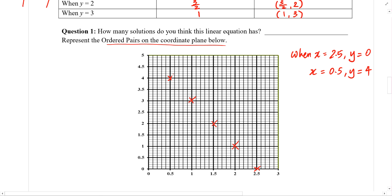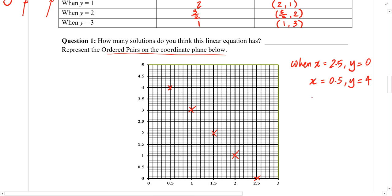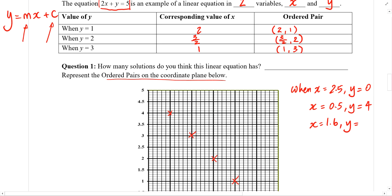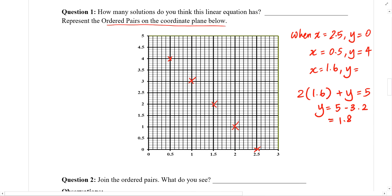But why stop at x equals to 0.5, 1, 1.5, 2, 2.5? Why not go in between? What about when x equals to maybe 1.6? What will our corresponding value of y be? So, 2 times 1.6 plus y equals to 5. y must be equals to 5 minus 3.2 which is 1.8. So when x is 1.6, 1.6 over here, y is equals to 1.8.